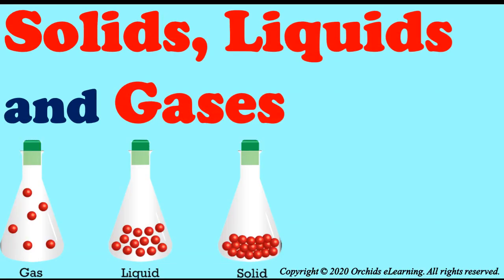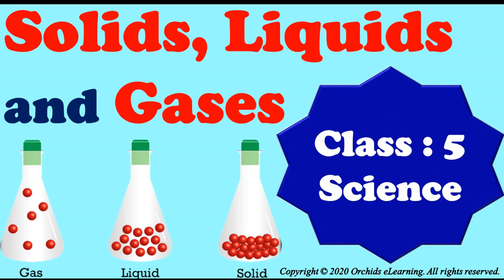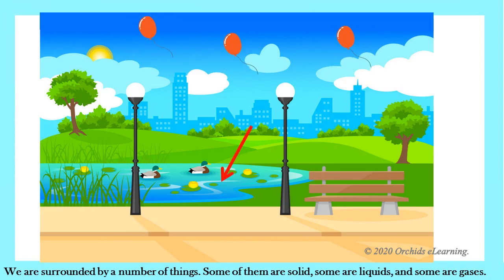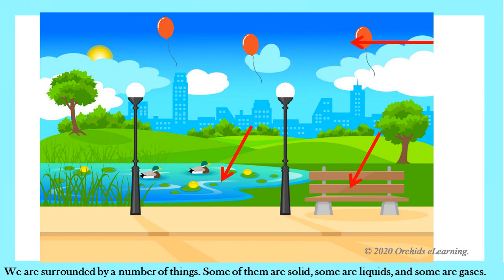Children, we have already learned the basics about solids, liquids, and gases in Class 3. Today we will learn the same lesson in detail with advanced features. This lesson is from Class 5 CBSE. As you know, we are surrounded by a number of things — some of them are solid, some are liquid, and some are in the gaseous form.